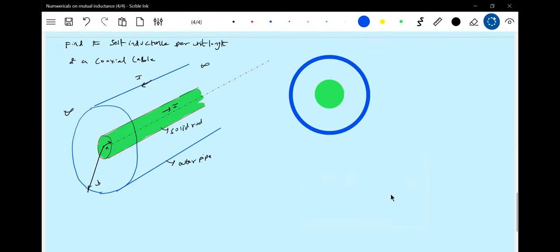This cross-sectional view is what I'm showing. There's a radius a. The current here is out of the plane. Go back to Ampere's circuit law.